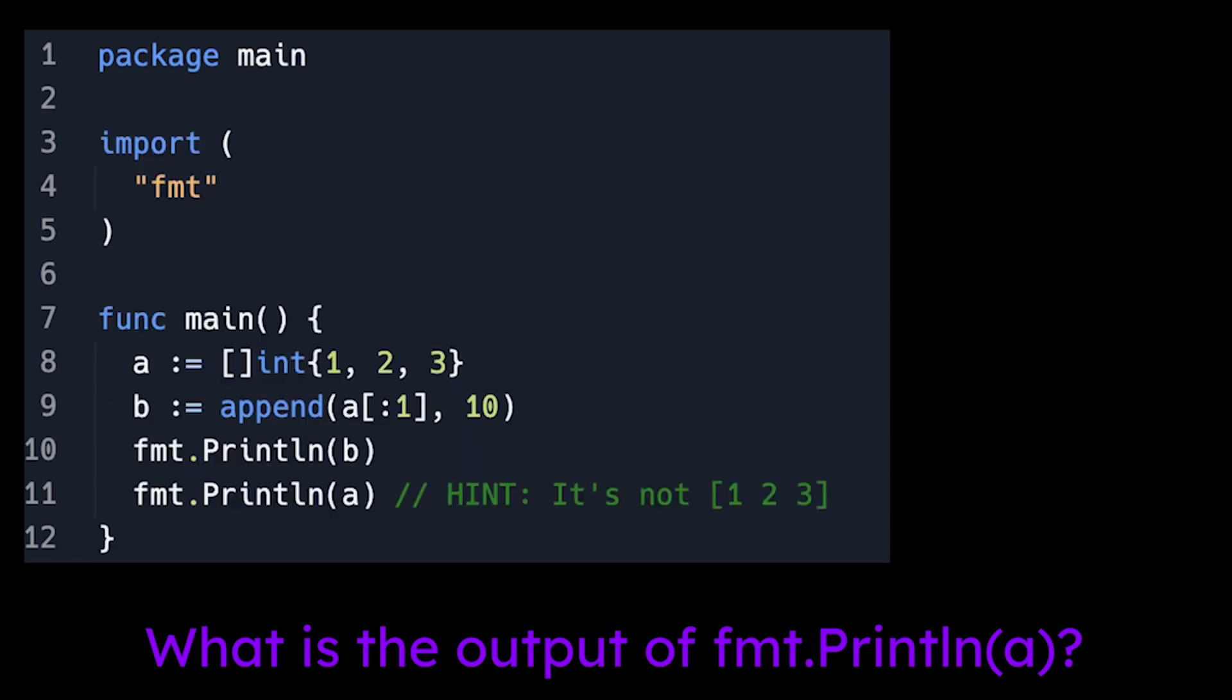We have this program where we create a variable A, set it equal to a slice of integers which holds 1, 2, and 3. Then we have B, which is the result of taking a sub-slice of A and appending 10 to it. Then we print out B and A.